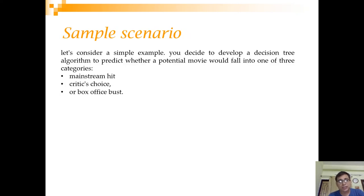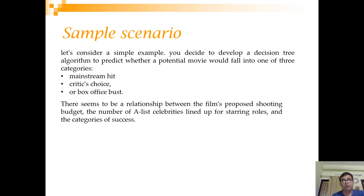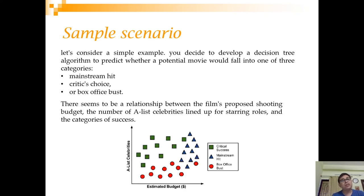Let's start with an example. Let's say you want to develop a decision tree where you want to categorize whether a potential movie will fall into a mainstream hit, a critic's choice, or a box office bust. You also know that this has a relationship with some variables like the budget and number of A-list celebrities. This target attribute is categorical, so this is a classification problem. Maybe we'll start by drawing this in a two-dimensional plane.